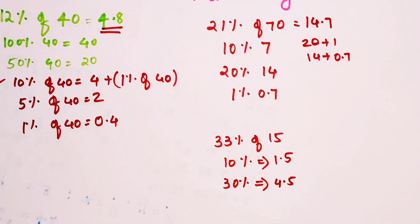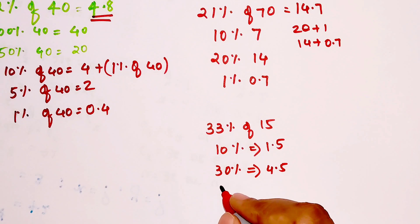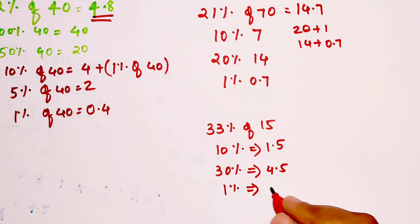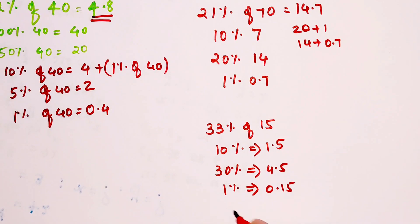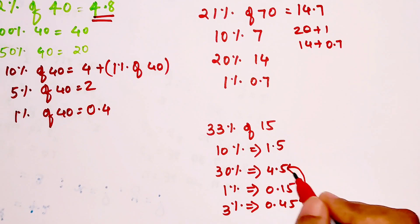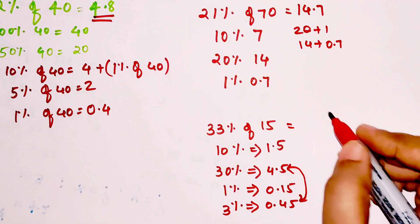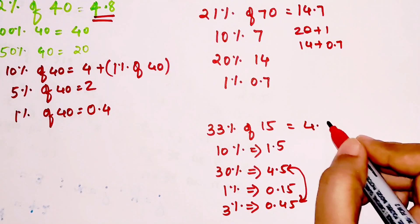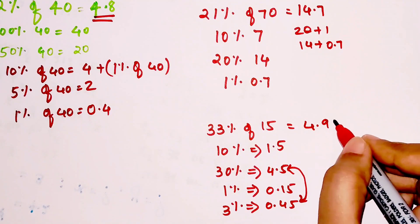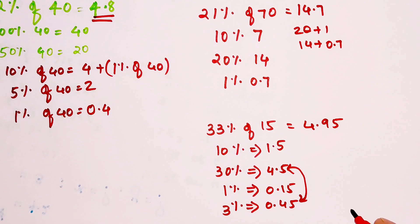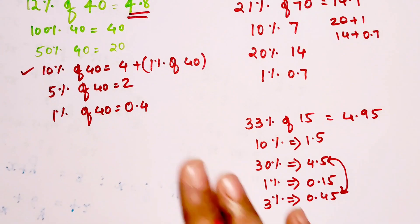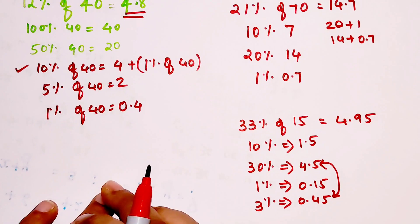So 30%, we will just multiply both values by 3, so my final answer will be 4.5. And 1% is nothing but 0.15, multiplying both sides by 3, so 3% will be 0.45. So adding these two my final answer now becomes 4.95.